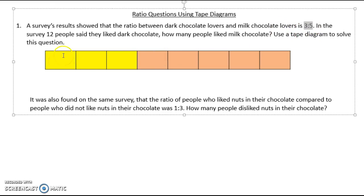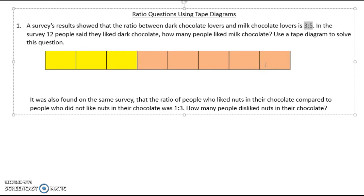So you can see that 3 out of 8 people like dark chocolate and 5 out of 8 like milk chocolate. I'm going to have 8 pieces: 3 of them represented in yellow are the dark chocolate pieces, and this peach color represents the 5 people who like milk chocolate.